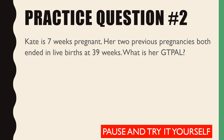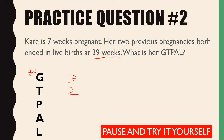Practice question number two — feel free to pause the video and try it yourself. Kay is seven weeks pregnant. Her two previous pregnancies both ended in live births at 39 weeks. What is her GTPAL? She's been pregnant twice before, and she's currently pregnant, so Gravida = 3. Both previous pregnancies ended in live births at 39 weeks — that's above 37 weeks, so those count as term births. T = 2.